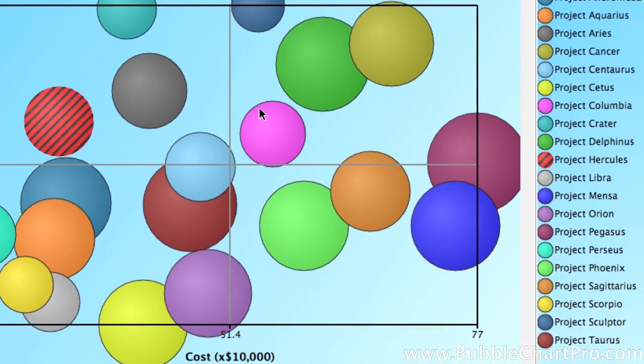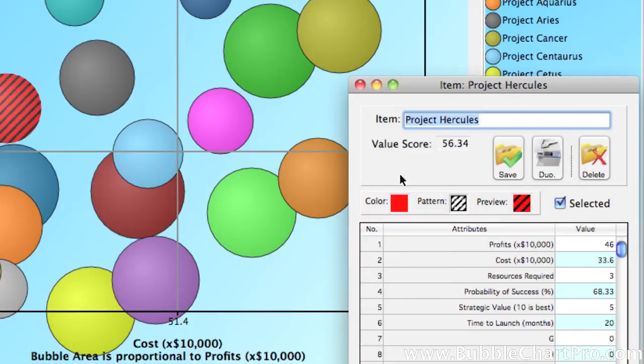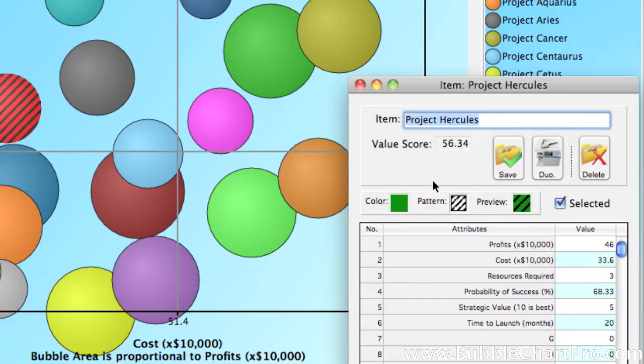Note, as I mentioned, we can also open it from the legend by double-clicking on the bubble icon or the name. So, let's do that and change it back to the solid pattern by clicking on the legend to open it.